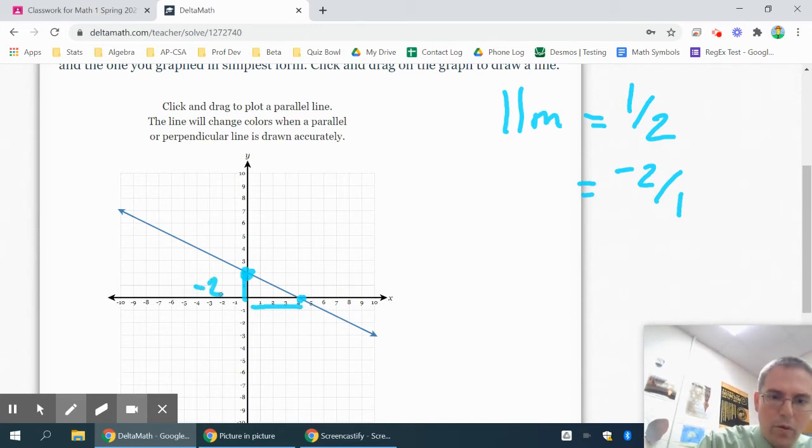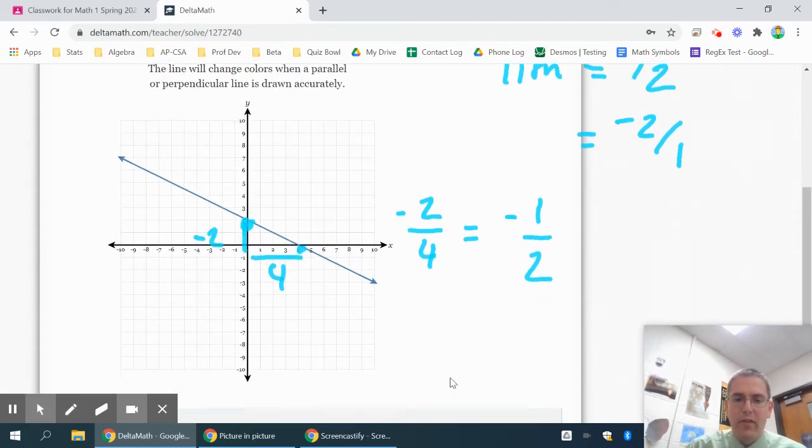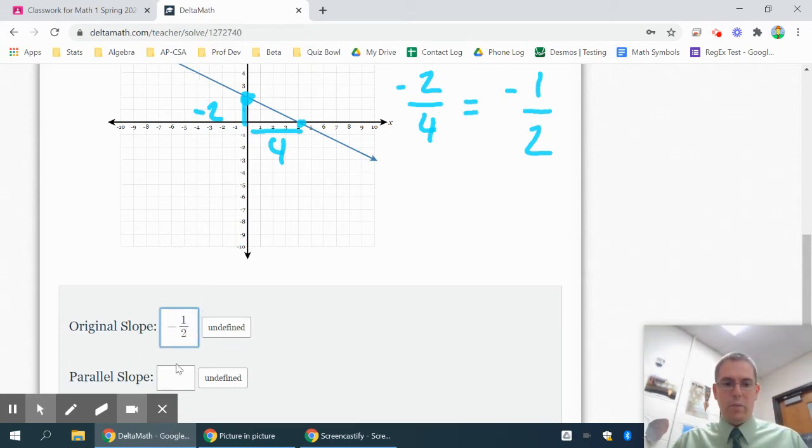So I'm going down two and over four, so my slope is negative two over four. It's a good idea to reduce that as negative one half. I think Delta Math will expect you to reduce those, so I could divide both of them by two and get negative one half. So my original slope is negative one half.